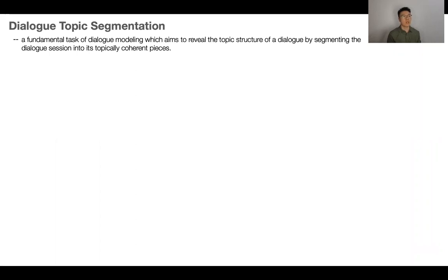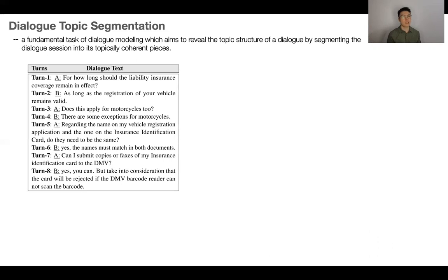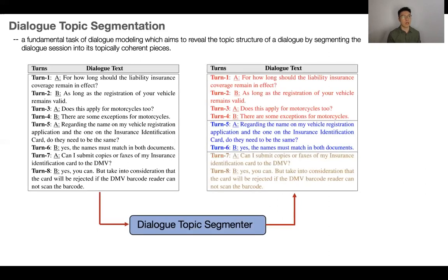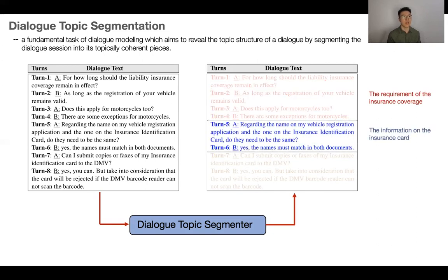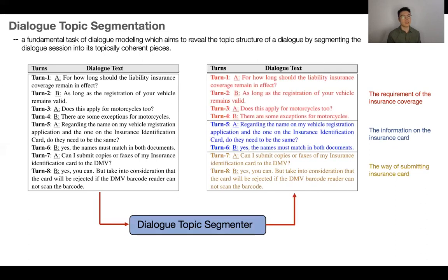Dialogue topic segmentation is a fundamental task of dialogue modeling which aims to reveal the topic structure of a dialogue by segmenting the dialogue session into its topic coherent pieces. The segment information can be further utilized to enhance dialogue related NLP tasks, such as dialogue generation, dialogue summarization, and response prediction.